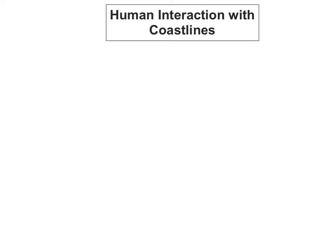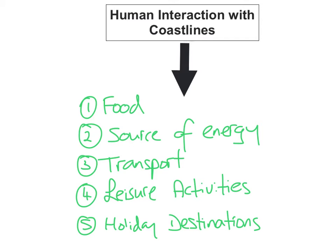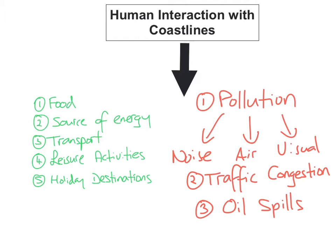We sometimes cause oil spillages which can threaten our coastal environments and the marine life. There is also a lot more noise pollution, and it can lead to more traffic congestion around coastal areas. Some of the negatives include pollution — noise, air, and visual pollution — traffic congestion, and oil spillages in the sea.